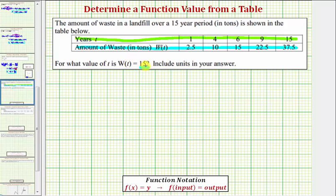We're going to locate the value of 15 in the second row where we find the function values w of t, which is equal to the amount of waste in tons. Looking at this column here, notice how this is where we find an output or a function value of 15. And notice how when the output is 15, the input t is six, which represents six years.